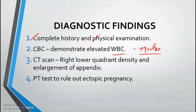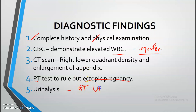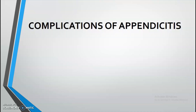A pregnancy test is also performed to rule out ectopic pregnancy, because ectopic pregnancy — which occurs outside the uterus and can occur intra-abdominally near the right lower quadrant — can present with almost the same manifestations as appendicitis. Urinalysis is also done to check for urinary tract infection.